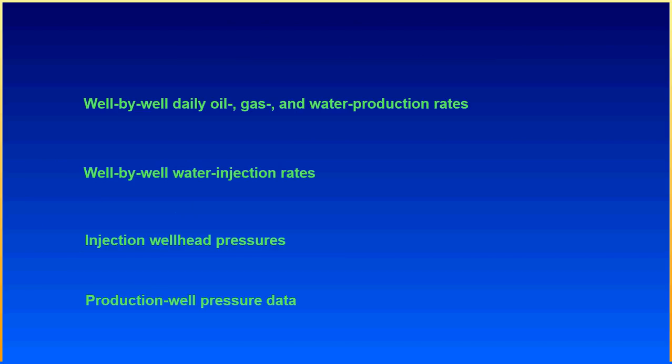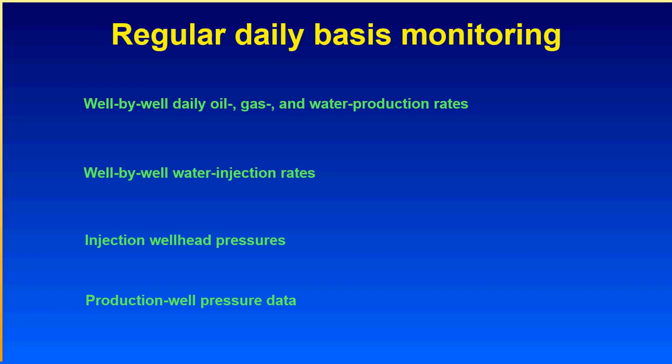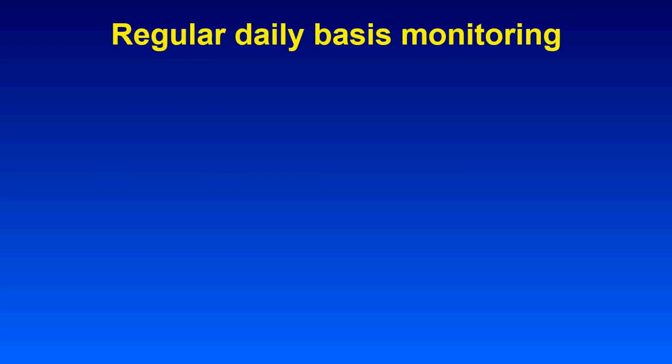Starting with regular daily basis monitoring: well by well, you monitor daily oil, gas, and water production rates, as well as ratios such as gas-oil ratio and water cut, and cumulative production for gas, oil, and water. The second item is well-by-well water injection rates and how to manage those rates. We will also discuss injection wellhead pressure and production well pressure data — both at wellhead and reservoir or downhole level — on a regular daily basis.